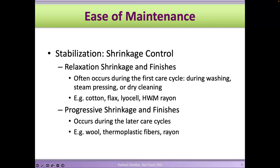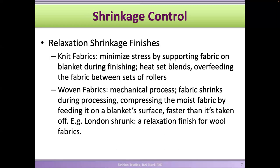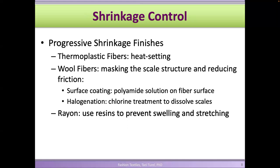Cotton, flax, lyocell, and rayon — cellulosic fibers — generally have relaxation shrinkage, but fibers like wool, thermoplastics, and rayon will have progressive shrinkage. We do finishes to stabilize the fabric so that it doesn't shrink as much. With knit fabrics, we can heat-set them, or overfeeding the fabric between sets of rollers will stabilize it. With woven fabrics, there are mechanical processes where you shrink the fabric first so that it doesn't shrink anymore later on.